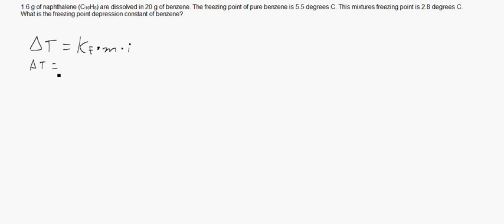Delta T is equivalent to the freezing point of the pure solvent minus the freezing point of the solution. Let me write that out. The freezing point of the pure solvent minus the freezing point of the solution. The pure solvent, in this case, would be benzene. And the solution is the C10H8 mixed with benzene.